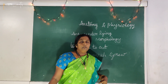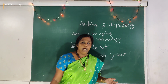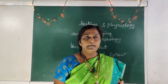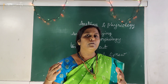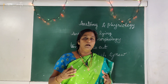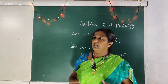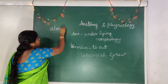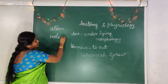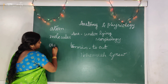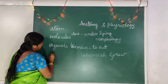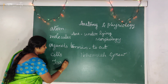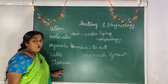In your lower classes, you might have studied about tissues and various kinds of tissues. If you take plants, they show various degrees of organization — organized into molecules, molecules to organelles, organelles to cells, and cells to tissues. Tissues form the organs.